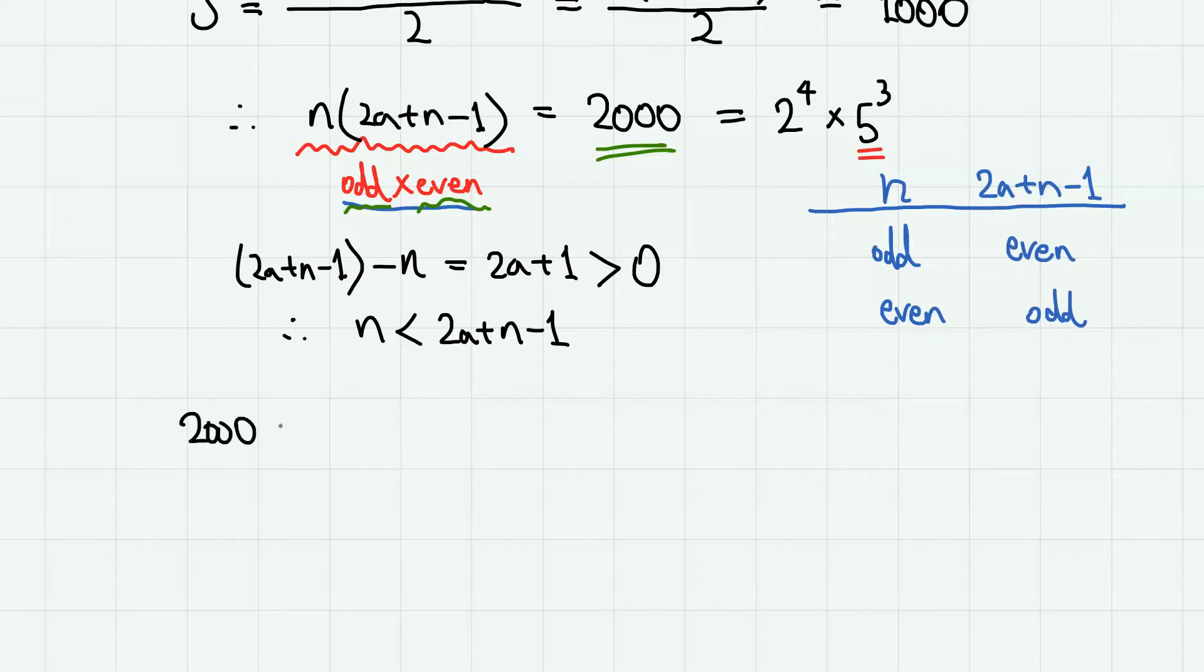So 2000 can be expressed as either 1 times 2000, which is odd times even. And then if we use 5 here, then we have 5 times 400. And if we use 5 squared here, which is still an odd number, then we have 80 as the even number. And finally, with 5 cubed, then we have 16.